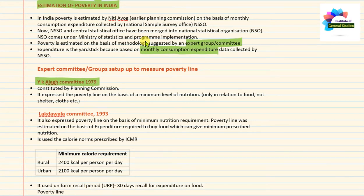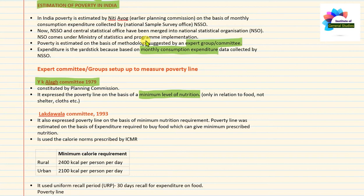The YK Alagh Committee identified the minimum level of nutrition that a person needs to survive. That nutrition requirement was then converted into a monetary value — meaning, how much money should be spent to meet that minimum level of nutrition. This monetary value formed the basis of the poverty line. The key consideration of the YK Alagh Committee was minimum nutrition.